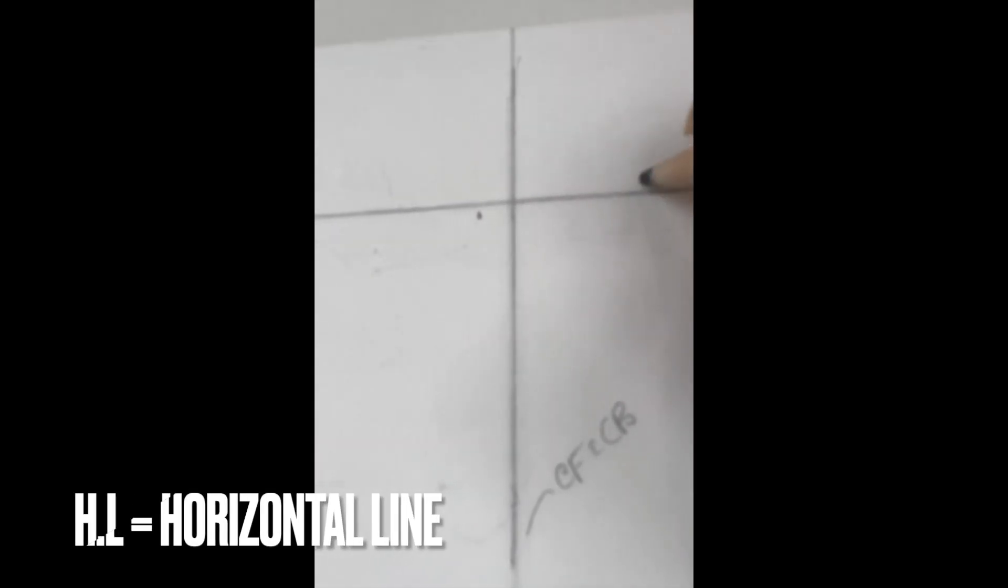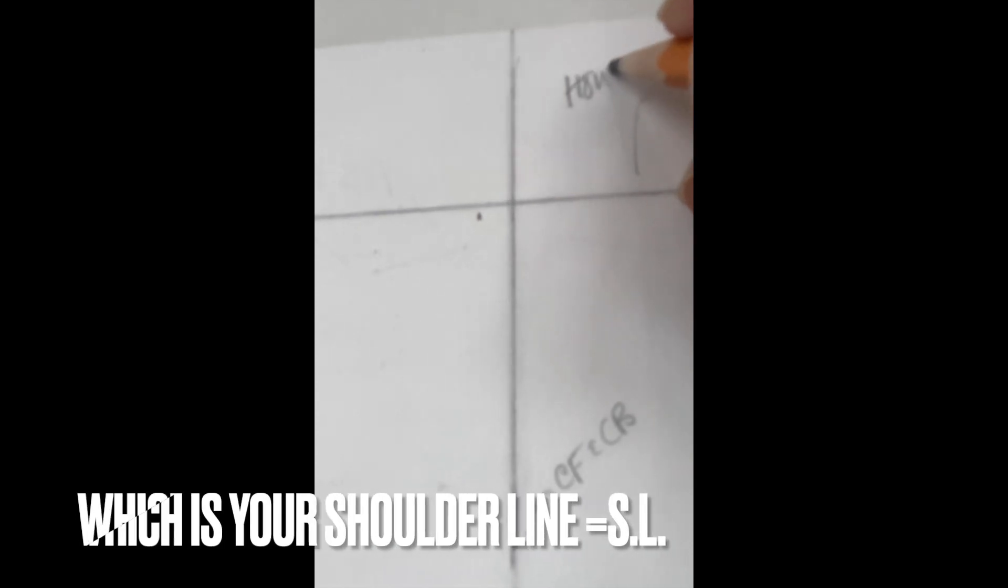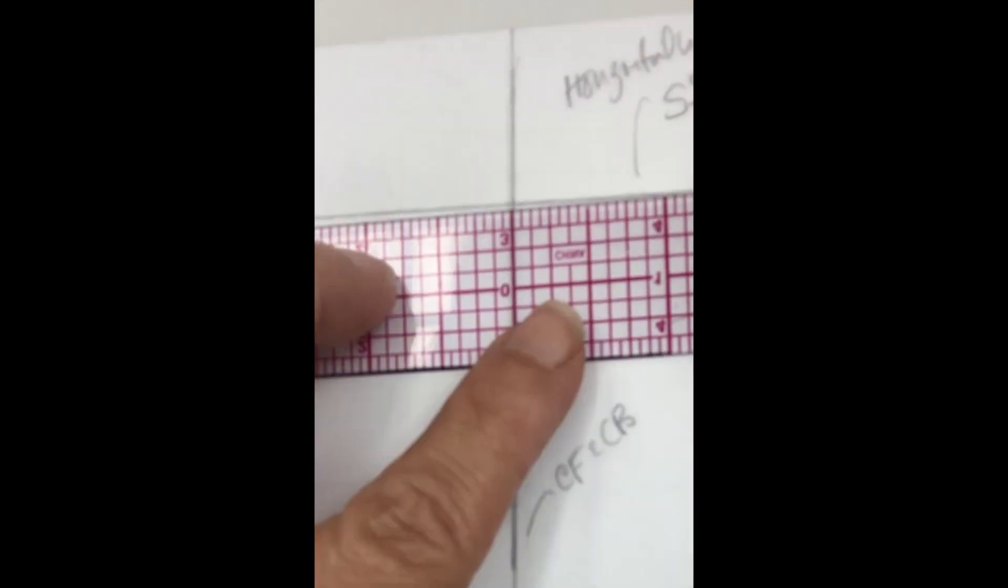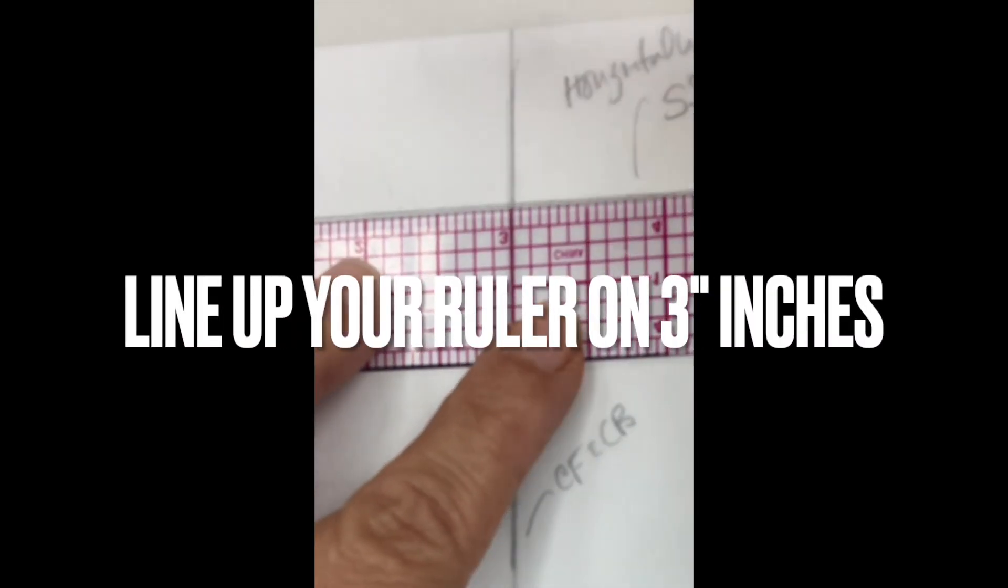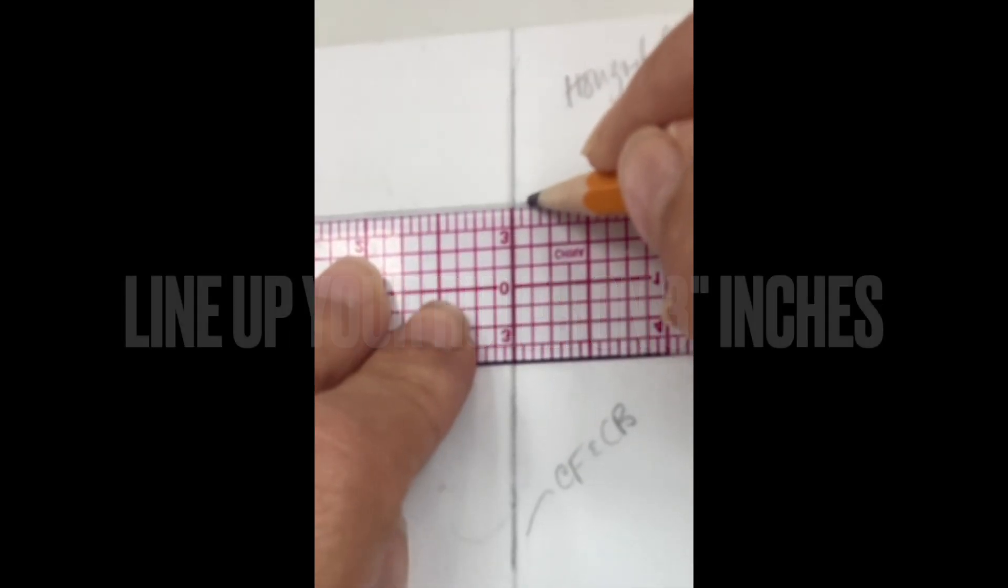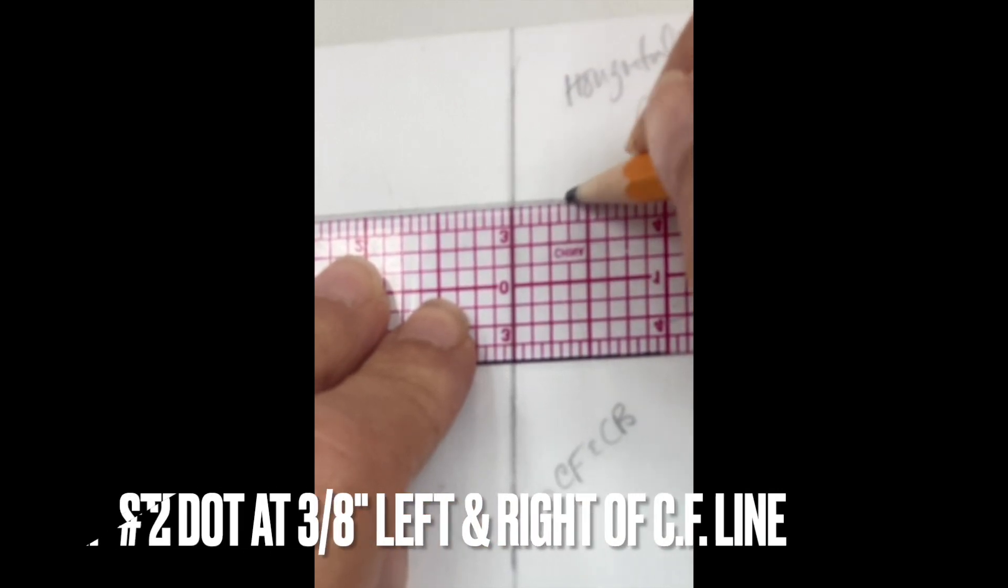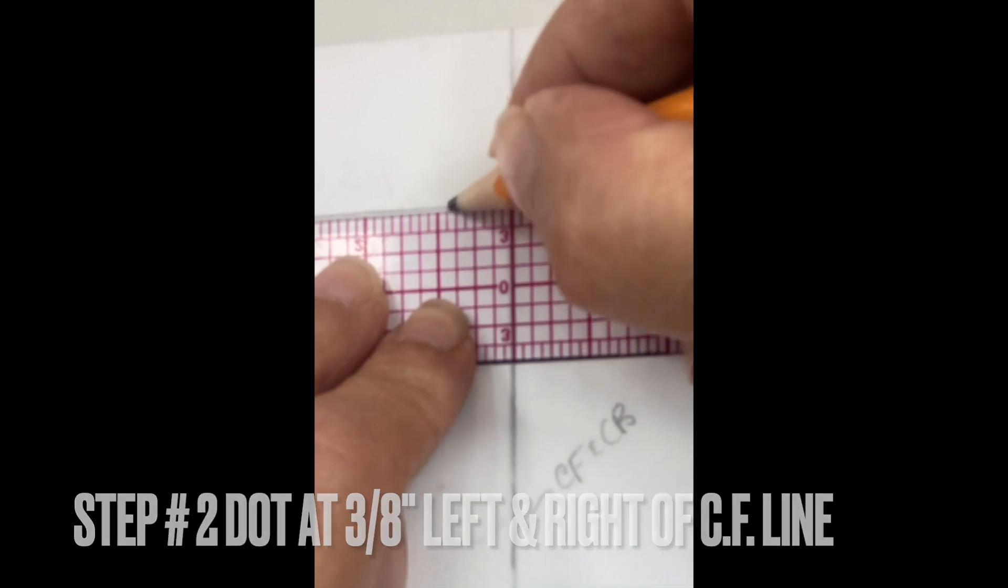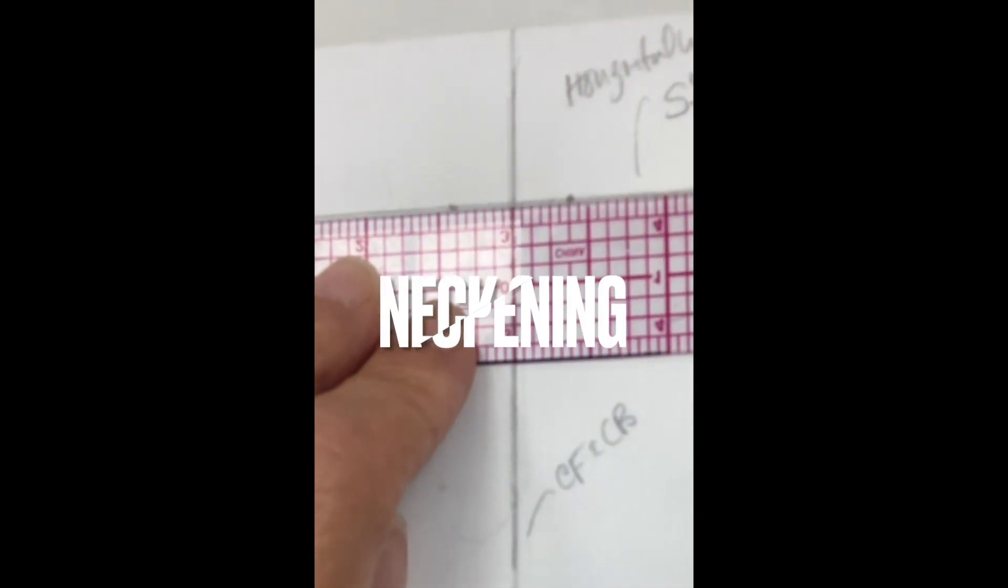Is your shoulder. So we're gonna start with a crew neck. Make sure my paper's nice and clean, lining it up with number three. And you're gonna count one three-eighths left and three-eighths right. Three-eighths is one, two, three. Make a dot on that line. One, two, three and make a dot. That is your neck opening.